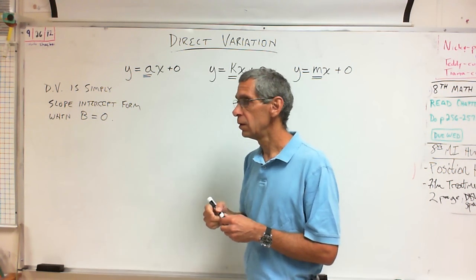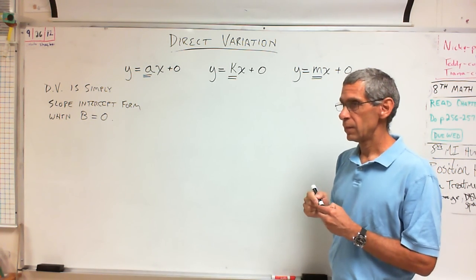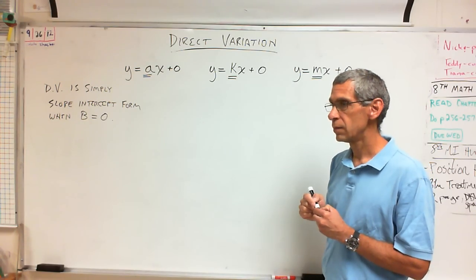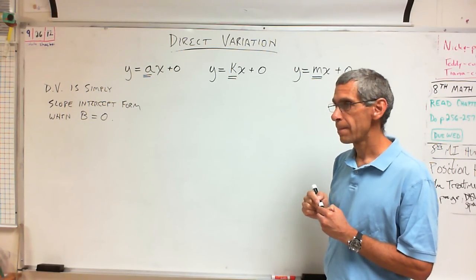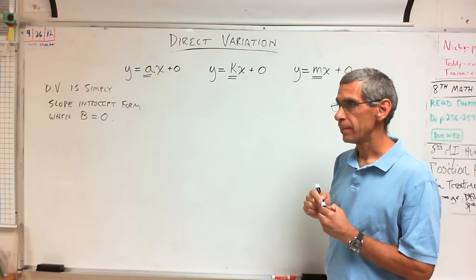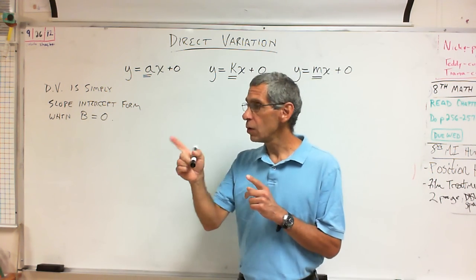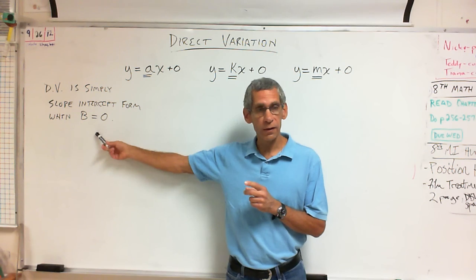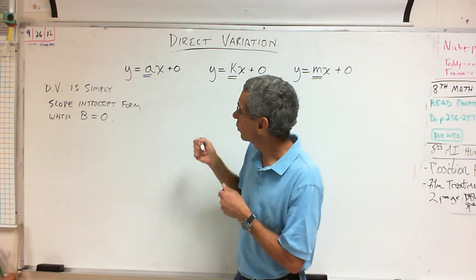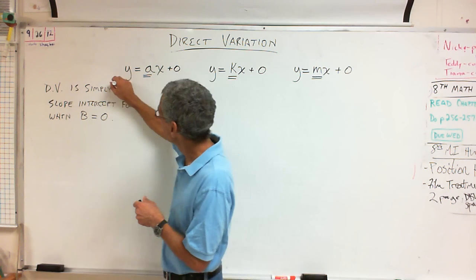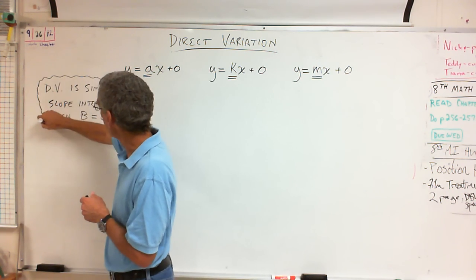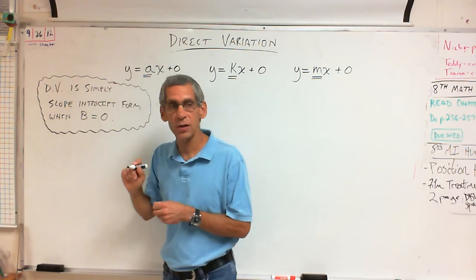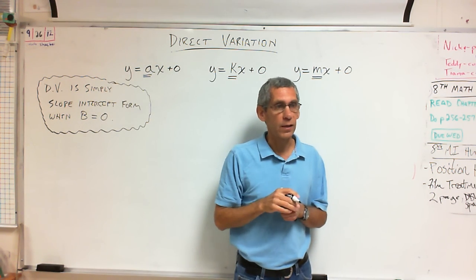So, if that's Y equals AX plus 4, that's not direct variation. If this is true, what point does every single direct variation problem have in it? Zero comma what? Zero comma zero.